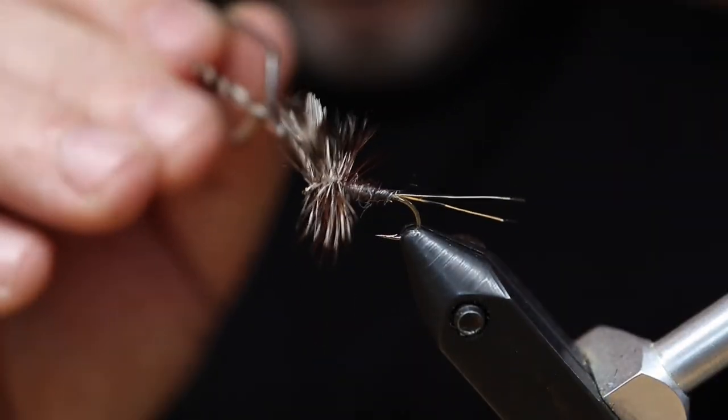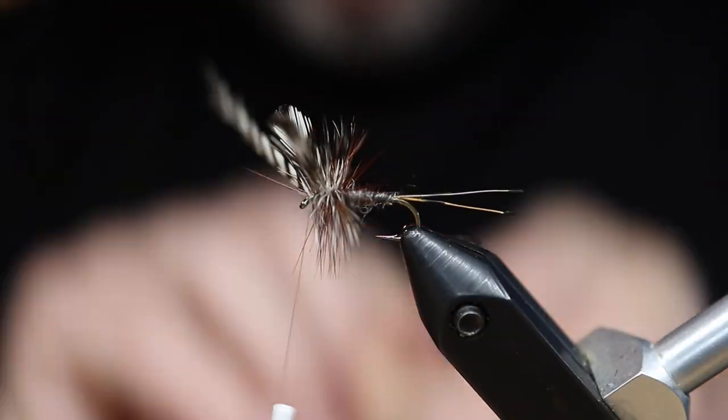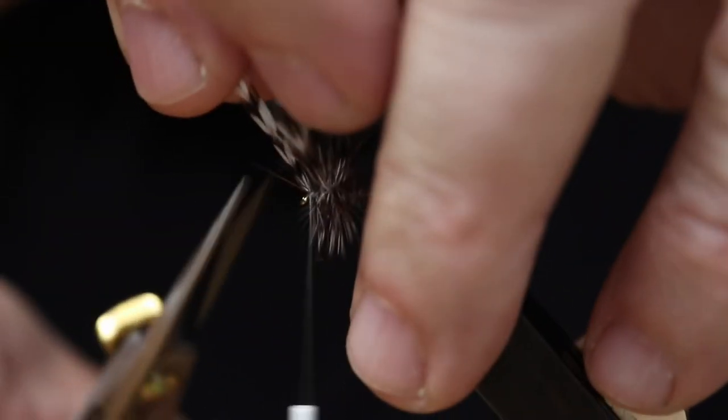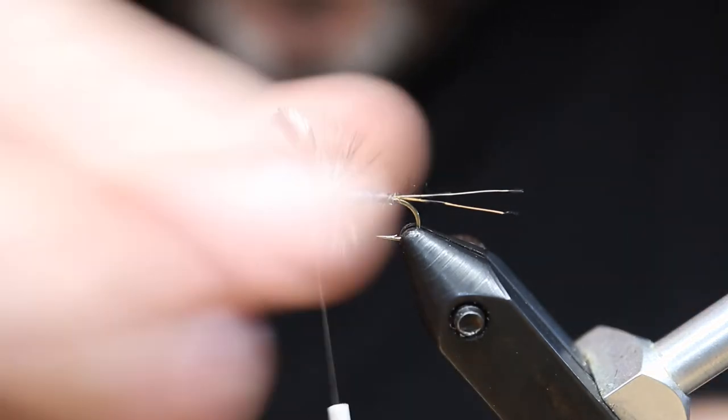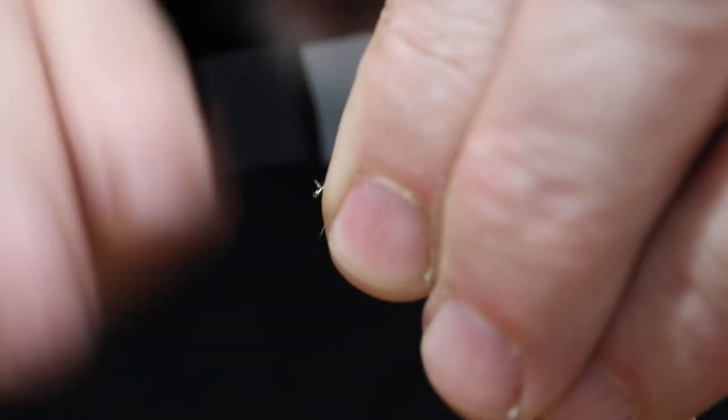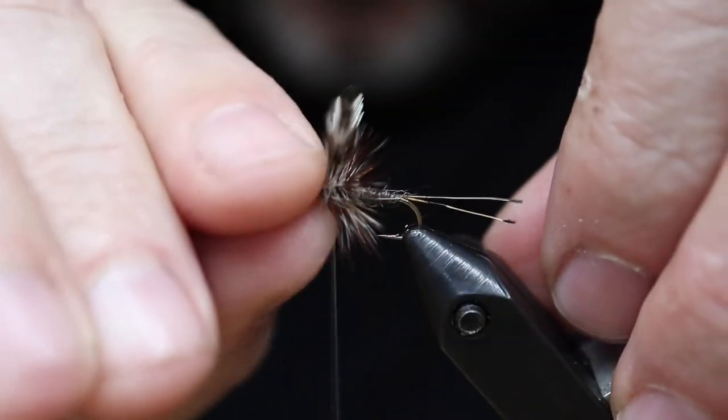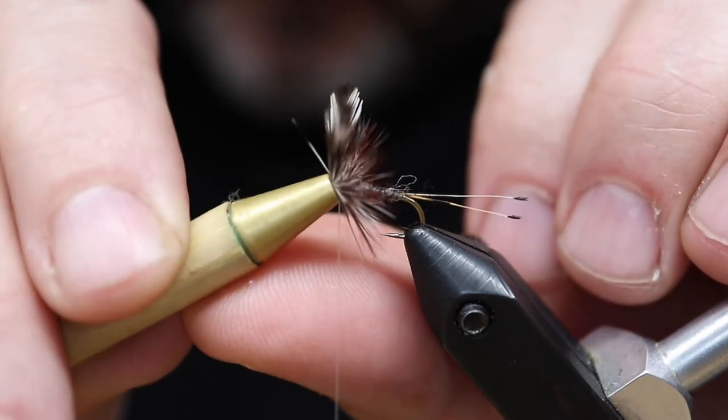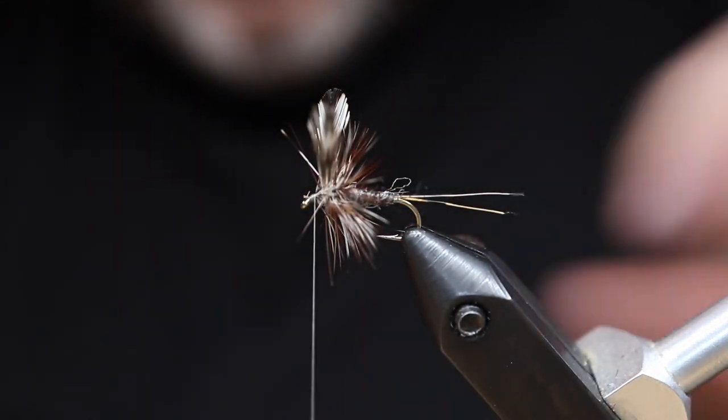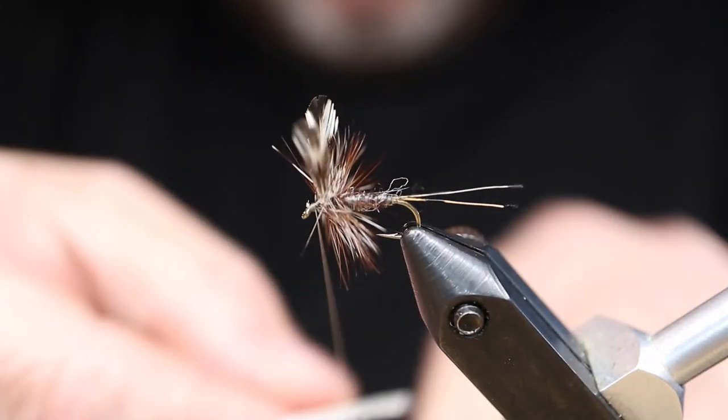This fly is super famous and has been adapted in so many ways. There's a feminine version of the Adams with an egg sac. The Catskill School took over the Adams and made it their own. We'll talk about that in a second. There's parachute Adams. There's all kinds of stuff. It's a super famous fly. It looks like a lot of different kinds of insects and buggy. Very versatile pattern. And that's why it's been successful.